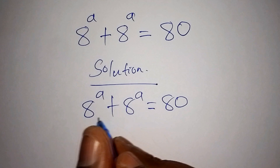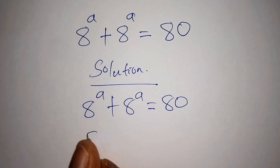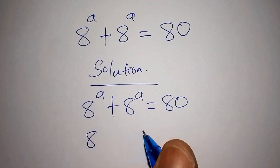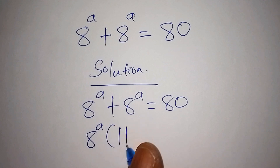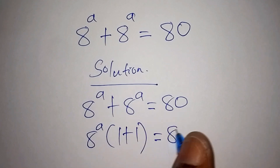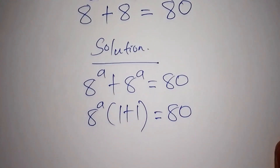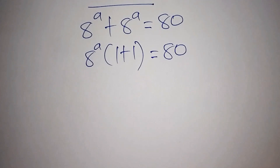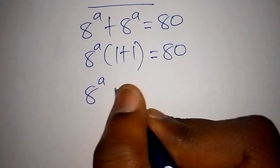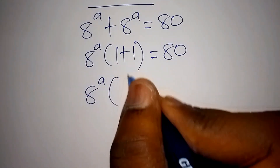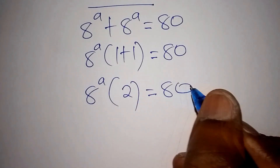The first thing is to factorize. So 8 to the power of A plus 8 to the power of A can also be written as 8 to the power of A into bracket 1 plus 1, which equals 80. Let us now work out the number inside the bracket: 1 plus 1 is 2, so we have 8 to the power of A multiplied by 2 equals 80.